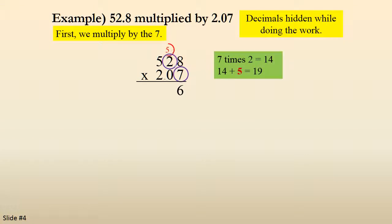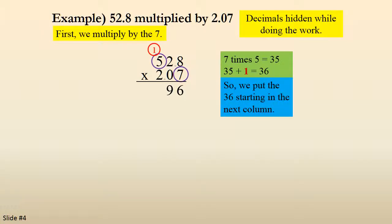7 times 2 gives us 14 plus the 5 gives us 19. So we put the 9 in the next column and we carry the 1. 7 times 5 is 35 plus the 1 gives us 36. So we put the 36 starting in the next column to the left.